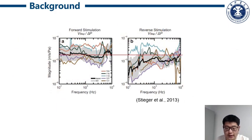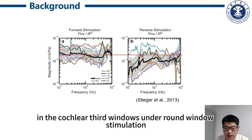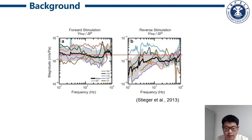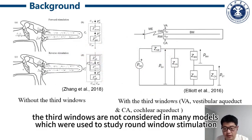However, Stieger et al. found that cochlear fluid leakage occurs during round window stimulation. However, this window is not considered in many models which were used to study round window stimulation.